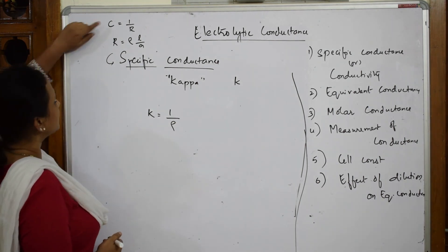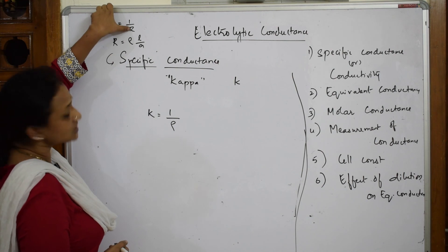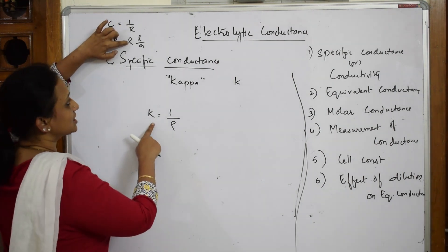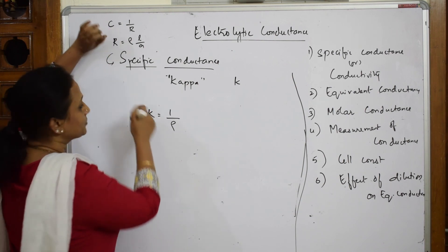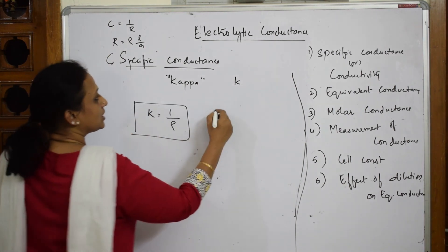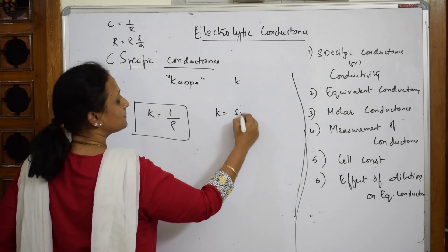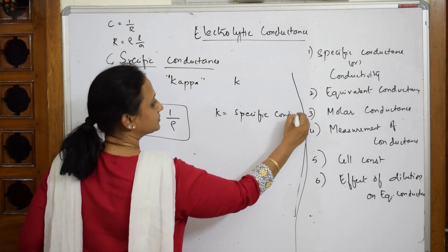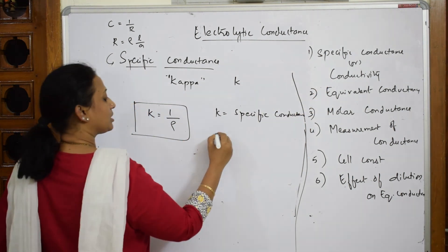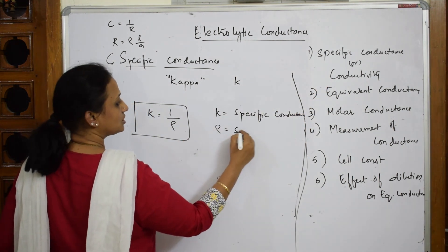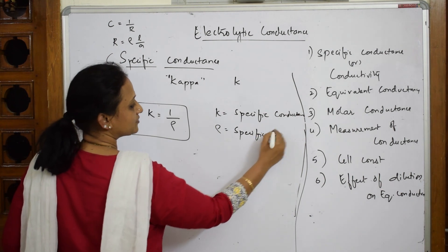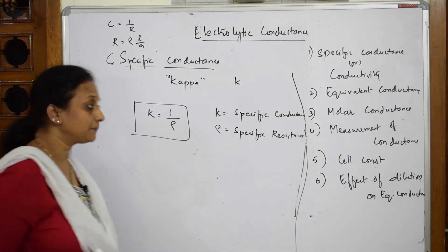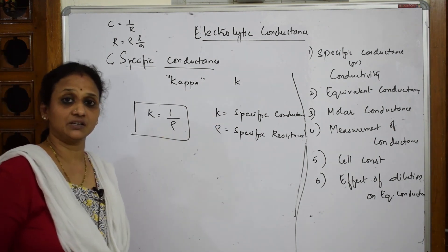Conductance and resistance are inversely related, and similarly specific resistance and specific conductance are also inversely related. So kappa is called specific conductance and Rho is called specific resistance. Now let us come back and start with conductivity next.